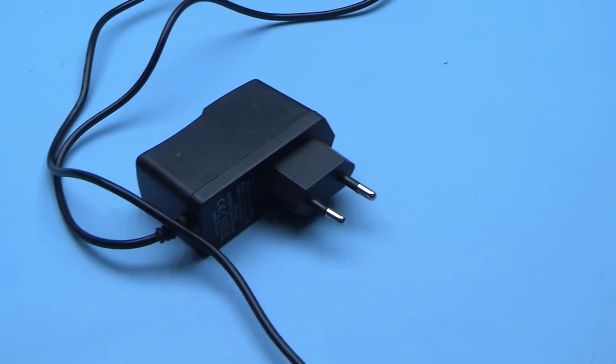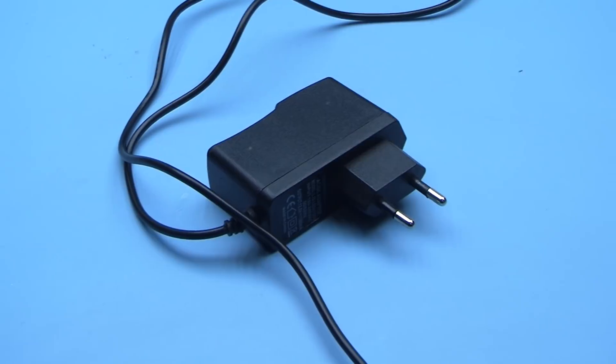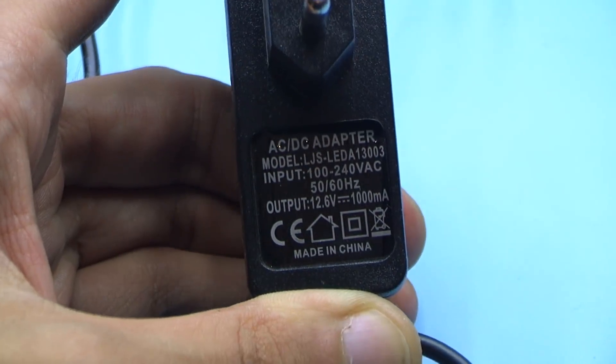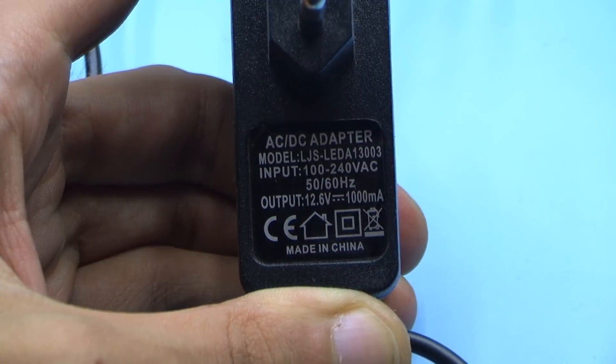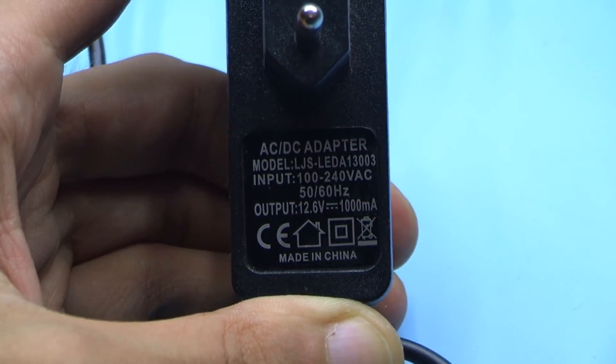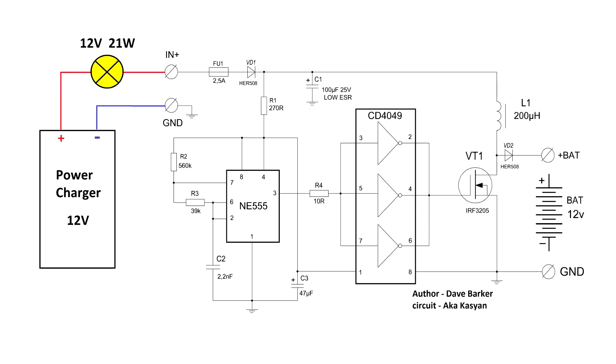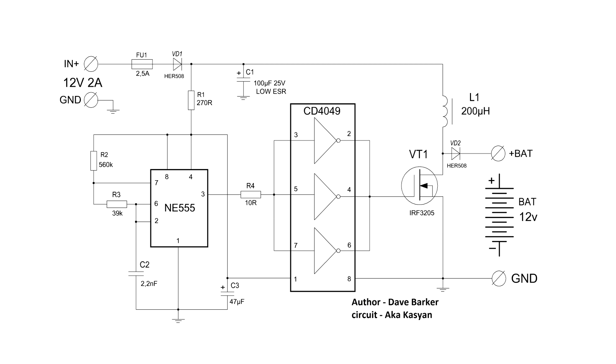But not directly. You must connect through a 12-volt incandescent lamp with a power of about 21 watts so as not to exceed the charge current. This will be discussed in more detail at the end. The battery which needs to be restored is connected to the output of the device. Well, in principle, that's all.